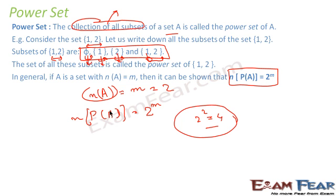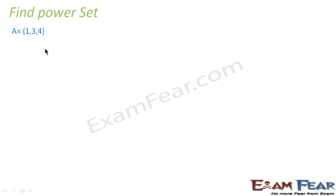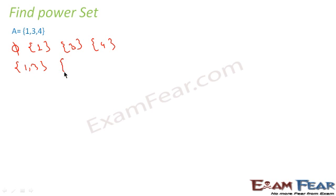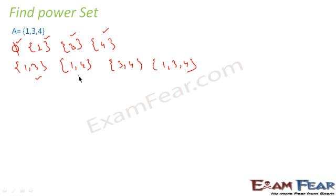Let us take one more example. We have set A = {1, 2, 3}. Let's write all the subsets of A. Single-element subsets: ∅, {1}, {3}, {4}. Two-element subsets: {1,3}, {1,4}, {3,4}. And the full set {1, 3} — noting that order doesn't matter in sets, so {4,1} is the same as {1,4}. Counting all subsets gives us 8 elements, and the whole collection is the power set of A.